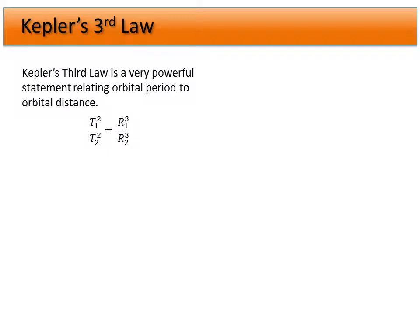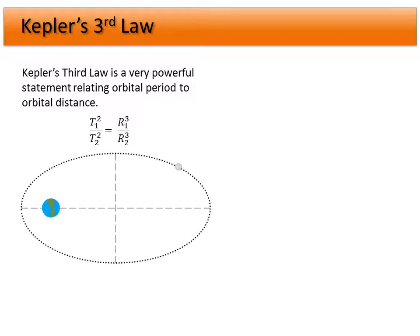This is a powerful concept. For instance, if we know that Halley's Comet orbits the Sun, and we know our own semi-major axis and orbital period of one year, we can determine the period of Halley's Comet and figure out how far out it actually travels.